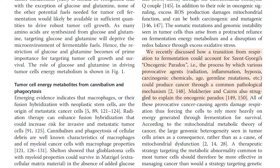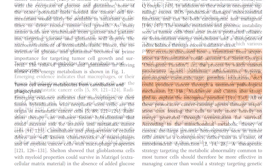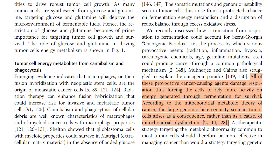The somatic mutations and genomic instability seen in tumor cells thus arise from a protracted reliance on fermentation energy metabolism and a disruption of redox balance through excess oxidative stress. We recently discussed how a transition from respiration to fermentation could account for St. Georgi's oncogenic paradox — i.e., the process by which various provocative agents such as radiation, inflammation, hypoxia, carcinogenic chemicals, age, and germline mutations could produce cancer through a common pathological mechanism. All of these provocative cancer-causing agents damage respiration, thus forcing the cells to rely more heavily on energy generated through fermentation for survival. According to the mitochondrial metabolic theory of cancer, the large genomic heterogeneity seen in tumor cells arises as a consequence, rather than as a cause, of mitochondrial dysfunction.